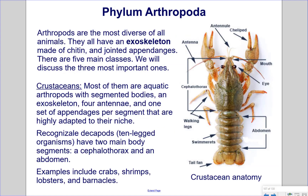Phylum Arthropoda. Arthropods are the most diverse of all animals. They have an exoskeleton made of chitin and jointed appendages — the name arthropod means 'jointed foot.' Crustaceans are mostly aquatic arthropods with segmented bodies, an exoskeleton, four antennae, and one set of appendages per segment. Recognizable decapods — ten-legged organisms — have two main body segments: a cephalothorax and an abdomen. Examples include crabs, shrimps, lobsters, and barnacles.